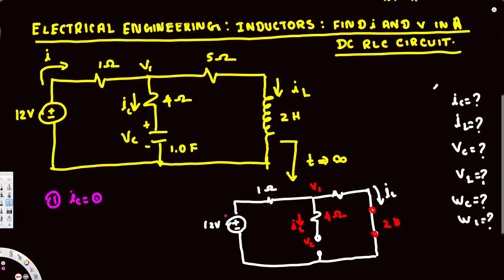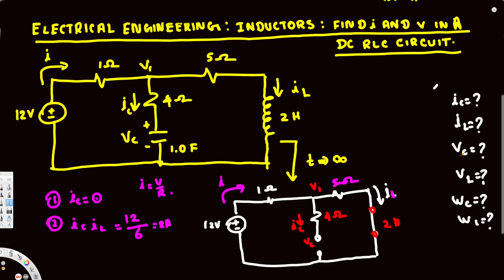Now let's look at IL. Since the capacitor is open, whatever the current I flowing in the circuit is going to be equal to IL, because they are in series. To find I, we use I = V/R. The resistance is 5 ohm and 1 ohm, and the voltage is 12 volts. So I = 12 divided by (1 + 5) = 12/6 = 2 amperes. So IL = 2 amperes.